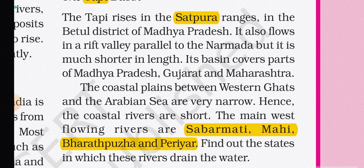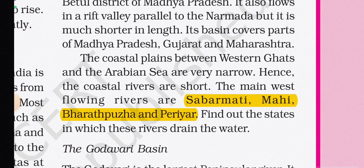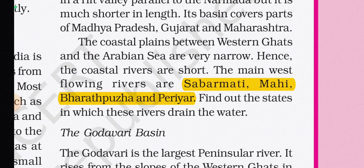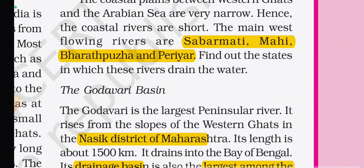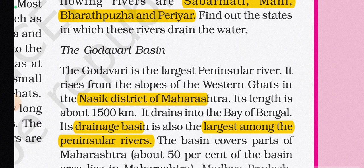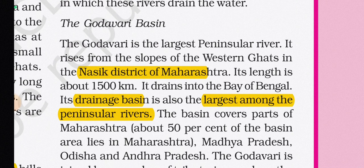The Tapi rises in the Satpura Ranges in the Betul district of Madhya Pradesh. It also flows in a rift valley parallel to the Narmada, but is much shorter. Its basin covers parts of Madhya Pradesh, Gujarat, and Maharashtra. The coastal plains between the Western Ghats and the Arabian Sea are very narrow, so the coastal rivers are short. The main west-flowing rivers are the Sabarmati, Mahi, Bharathapuzha, and Periyar.